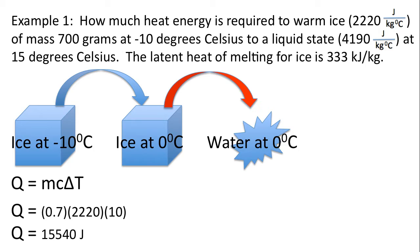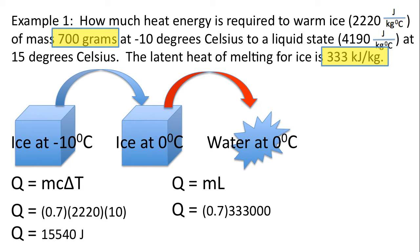Next, we melt the ice. Notice the temperature does not change during melting. The mass is still 700 grams, converted to 0.7 kilograms, and the latent heat of melting for ice is 333 kilojoules per kilogram. To get joules, we multiply 333 by 1000, giving 333,000 joules per kilogram. This yields 233,100 joules. It takes a lot of energy to change the state of a substance compared to simply warming it.